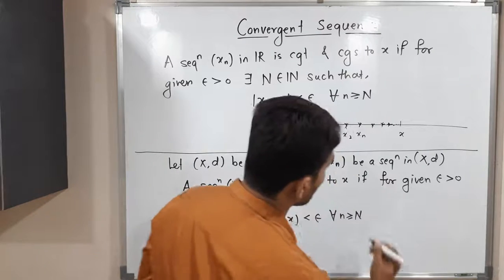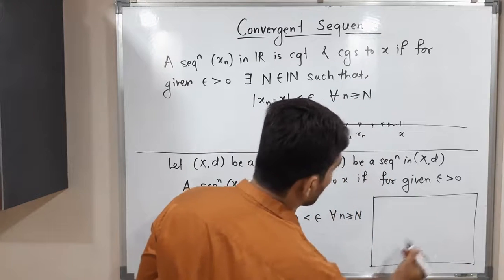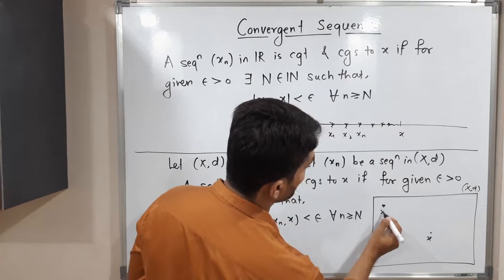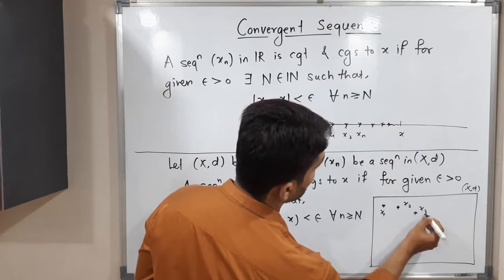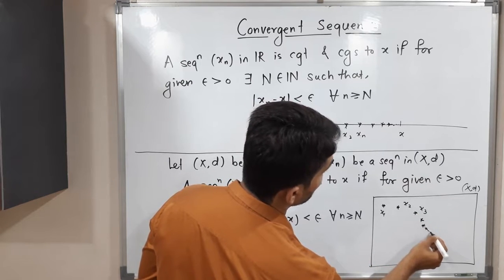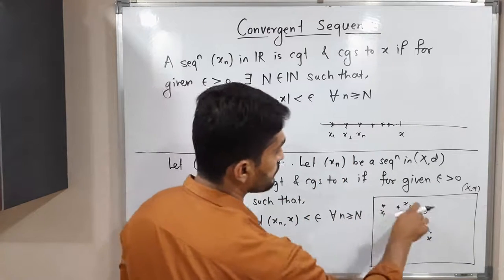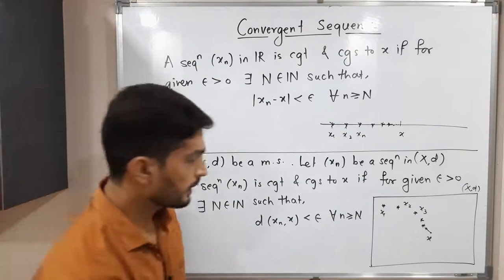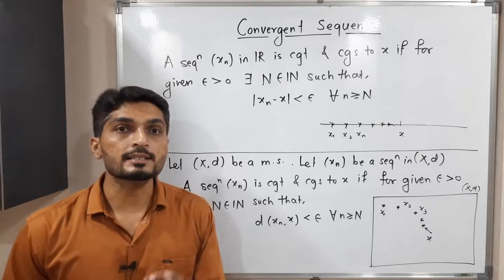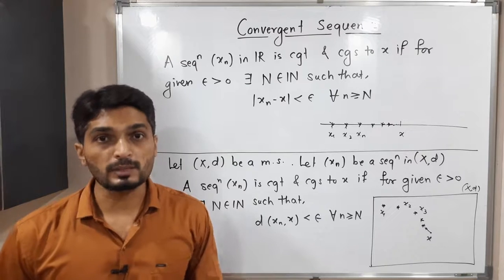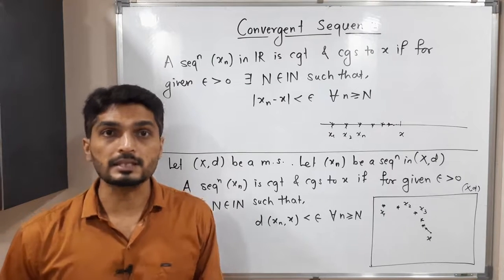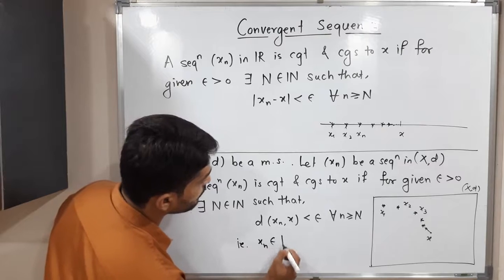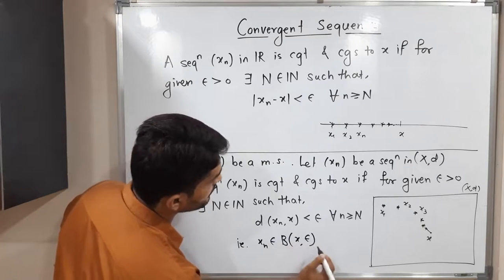Let me show this here. Suppose we have this metric space (X, d) — so this is our metric space. There is some point x and we have a sequence xₙ: this is x₁, x₂, x₃, x₄, x₅, x₆, x₇, and so on. All terms of the sequence are converging to point x. The distance of xₙ from x is less than epsilon, so if the distance of any point from the center of a ball is less than its radius, that point lies inside the ball. We can write: xₙ belongs to the open ball with center x, radius epsilon, with metric d.